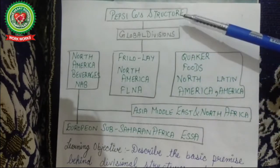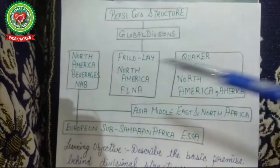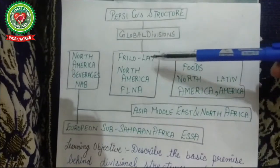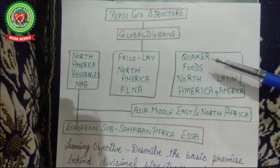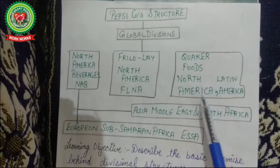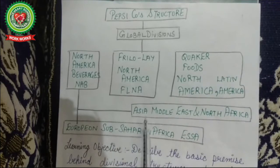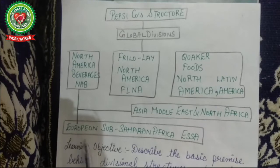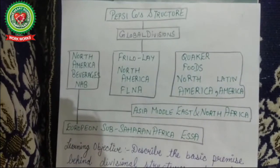When we talk about global divisions of PepsiCo: first we have North America Beverages (NAB), then Frito-Lay North America (FLNA), then Quaker Foods North America. Quaker Foods has two divisions. Then they have Asia, Middle East and North Africa, and another is European Sub-Saharan Africa (ESSA).